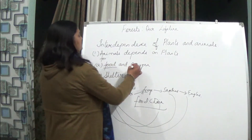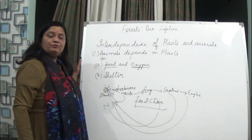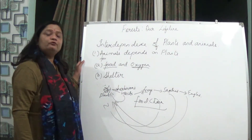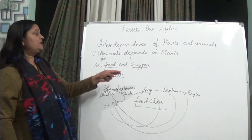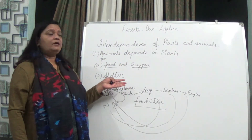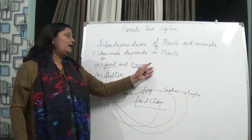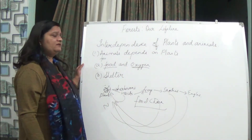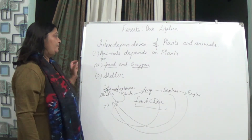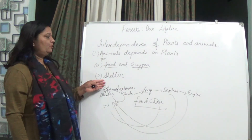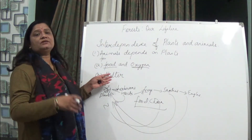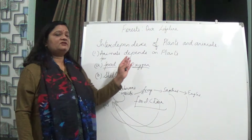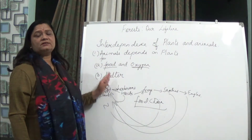Regarding oxygen: plants purify the air by adding oxygen during photosynthesis, taking in carbon dioxide and releasing oxygen, and this oxygen is taken up by animals. Animals also take shelter in the dense forest — below or on the branches of trees — so plants provide shelter to animals.